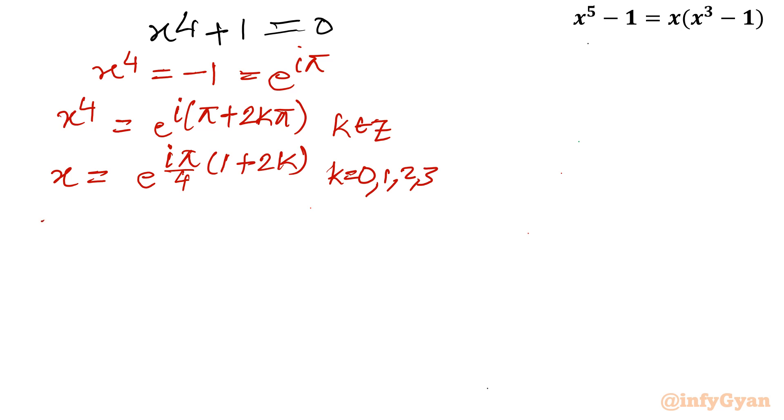So if I put k = 0, let me write here k = 0, I will get x₀ = e^(iπ/4). x₁ by putting k = 1, I will have e^(i3π/4). By putting k = 2, I will have x₂ = e^(i5π/4).